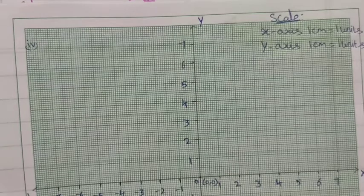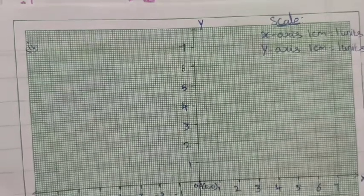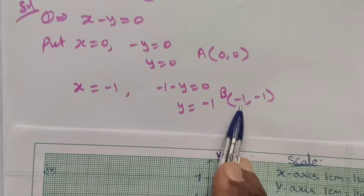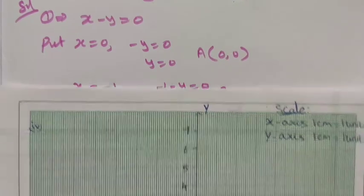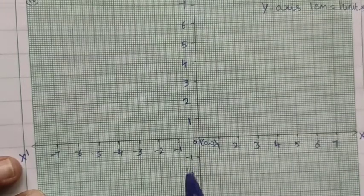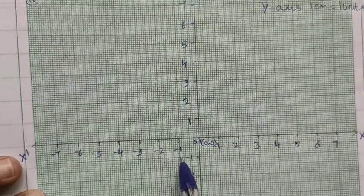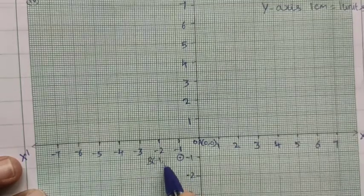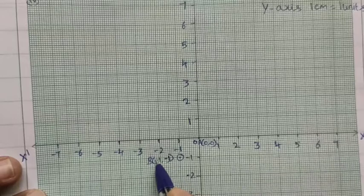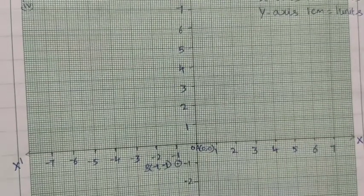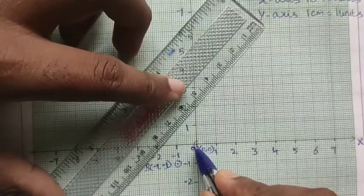Point B is (minus 1, minus 1) — x-axis minus 1 and y-axis minus 1. Now we draw a straight line through points A and B for the first equation, x minus y equal to 0.